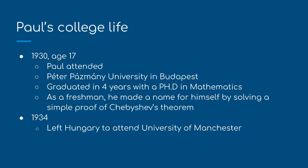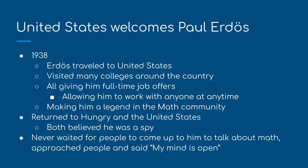In 1930, at age 17, Paul attended Peter Pázmány University in Budapest and graduated in four years with a PhD in mathematics. As a freshman, he made a name for himself by solving a simple proof of Chebyshev's theorem. In 1934, he left Hungary and attended the University of Manchester. After four years, in 1938, Paul Erdos traveled to the United States, visiting many colleges including Princeton, Notre Dame, and Johns Hopkins. All of those colleges gave him full-time job offers, making him a legend in the math community.